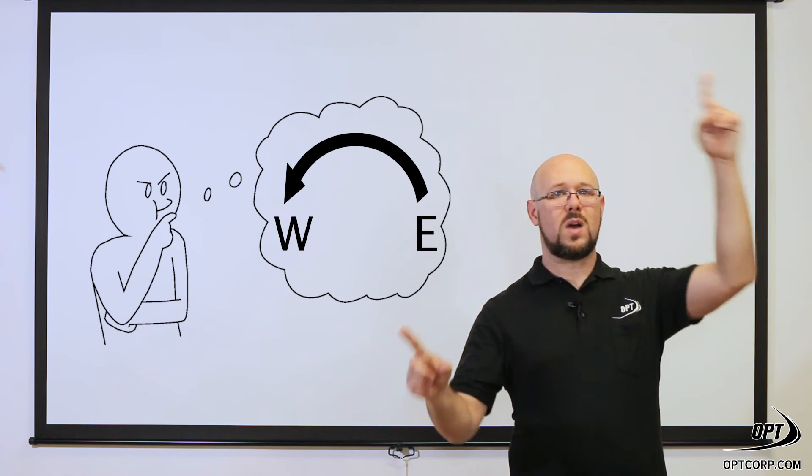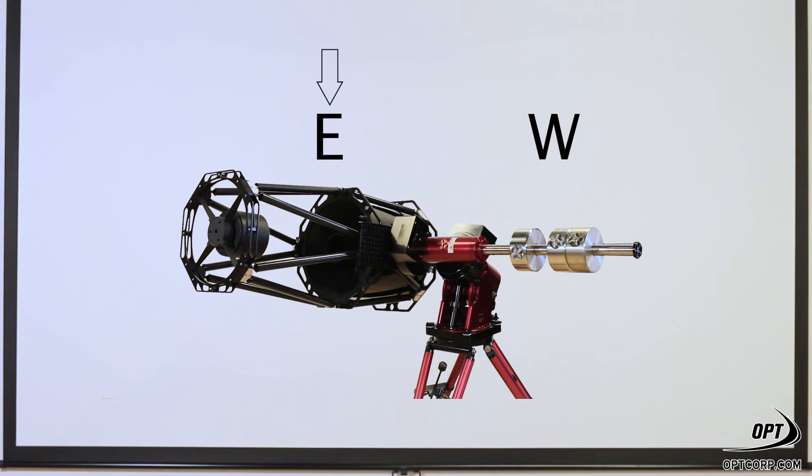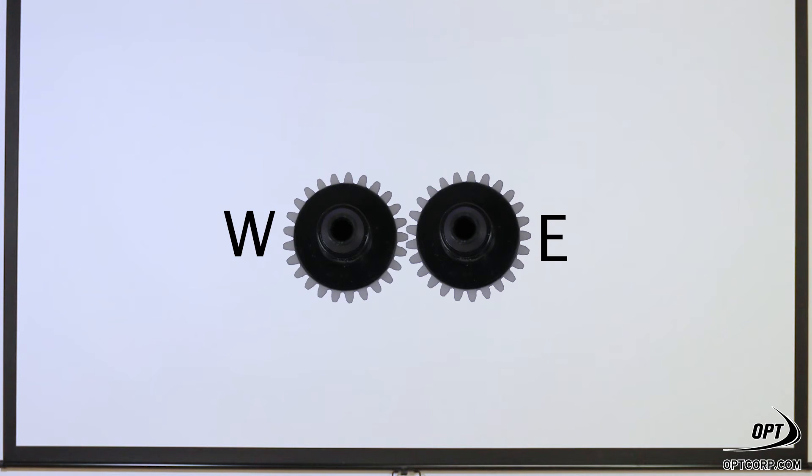If you think about it, as everything is tracking from east to west through the sky, gravity is acting downward on the east side. If you make the mount slightly east heavy, then it's going to keep the gear teeth meshed a lot better than if you allow it to float in between teeth.